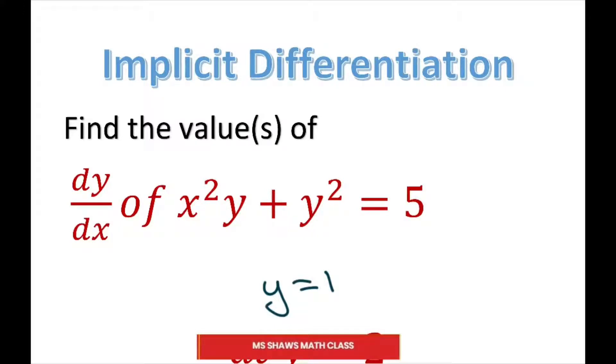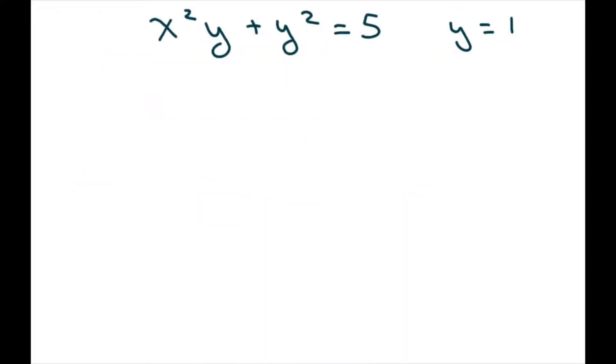Anytime you have these mixtures of x's and y's, we're going to use implicit differentiation. We'll get started, and on this first part we use the product rule. Take the derivative of x squared - that's 2x times y. Then you add x squared and take the derivative of y. The derivative of y is dy/dx. And the second piece, take the derivative of y squared - that's 2y dy/dx. And this equals 0.